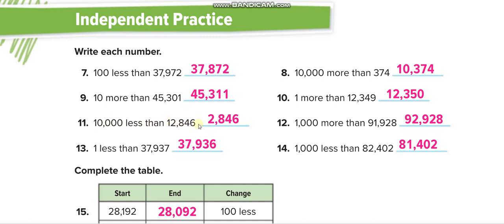10,000 less, so this is the 10,000, minus 1, so it's left 2,846. 1,000 more, so here 1 becomes 91, it will become 92,000. 1 less: 7 minus 1. 6,000 less: 82 minus 1,000 equals 81,000.